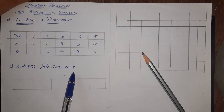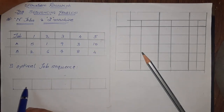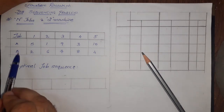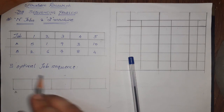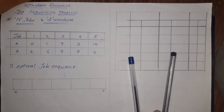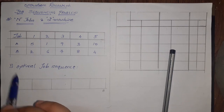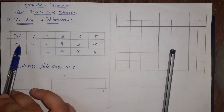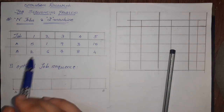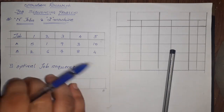In order to find the optimal job sequence, we need to create a table with five columns for the five jobs. Remember, if there are two machines, the left side of the table will represent machine A and the right side will represent machine B. We will find the optimal job sequence by taking the job which has the least number of hours. If the least value appears in machine A, we note it from the left side, and if it appears in machine B, we note it from the right side.